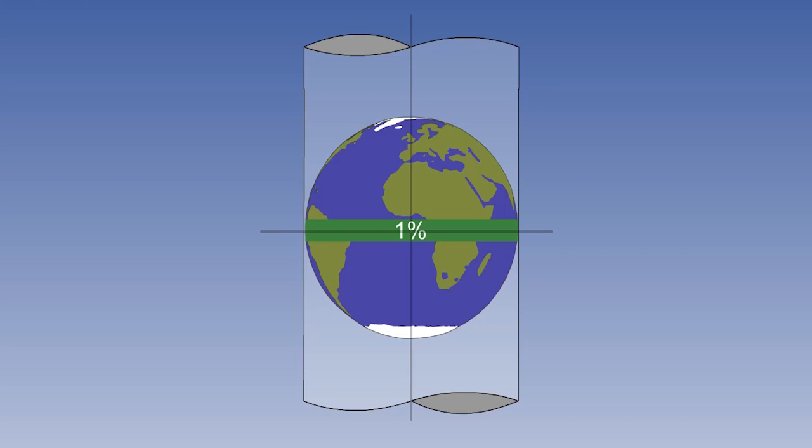However, out to 8 degrees north or south of the equator, the scale expansion is within 1% of the scale at the equator. This gives us a strip 480 nautical miles either side of the equator, within which the scale can be regarded as constant.